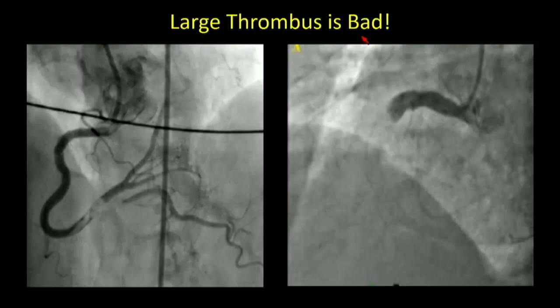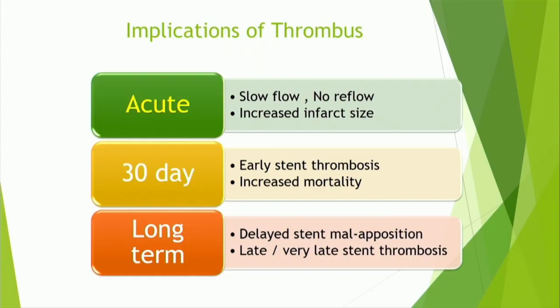Large thrombus is bad — that's the best take-home point for the day. On the left you see thrombus grade 4, on the right thrombus grade 5, and as an interventionist when we see either one, we say bad. Acutely, you have increased slow flow, increased no-reflow, and increased infarct size. At 30 days there's increased stent thrombosis, increased mortality, and long-term there's stent apposition issues and late and very late stent thrombosis.